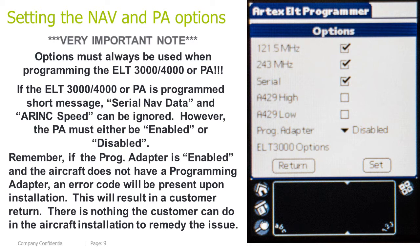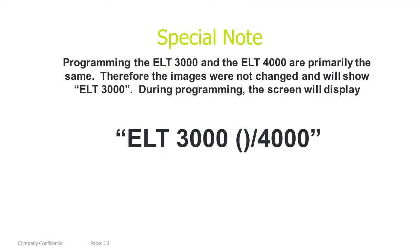Very important note: options must always be used when programming the ELT 3000/4000 or any PA. If the ELT 3000/4000 or PA is programmed for short message, serial NAV data and ARINC speed can be ignored; however, the PA must either be enabled or disabled. Remember, if a programming adapter is enabled and the aircraft does not have a programming adapter, an error code will be present upon installation — this will result in a customer return. There is nothing the customer can do in the aircraft installation to remedy the issue. Special note: programming the ELT 3000 and ELT 4000 are primarily the same; therefore, the images were not changed and will display ELT 3000. During programming, the screen will display ELT 3000/4000.